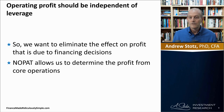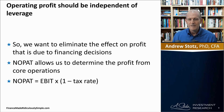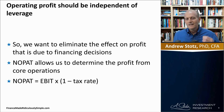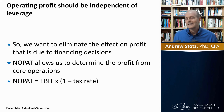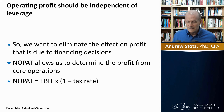We want to eliminate the effect on profit that's due to financing decisions. NOPAT allows us to determine the profit from core operations. It's calculated by taking EBIT times one minus the tax rate. We're taking away taxes because a company must pay taxes first — so the EBIT is not available to shareholders and debt holders until after you deduct the taxes you have to pay the government.